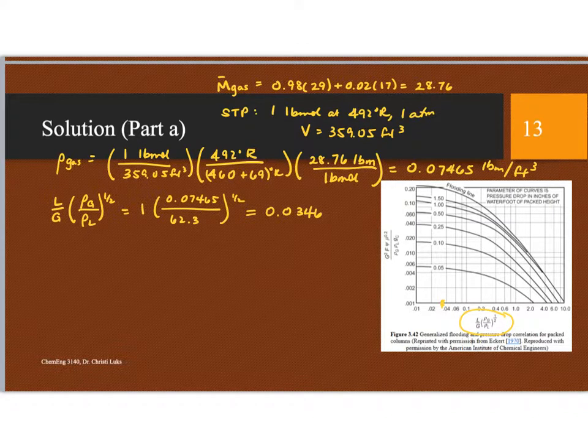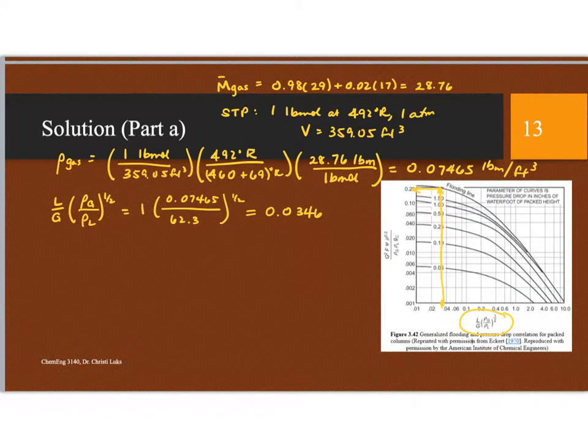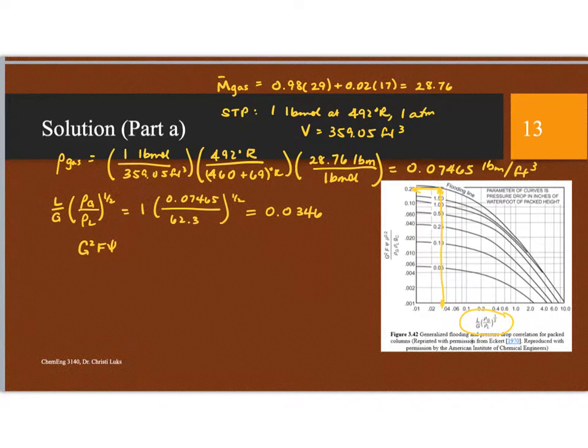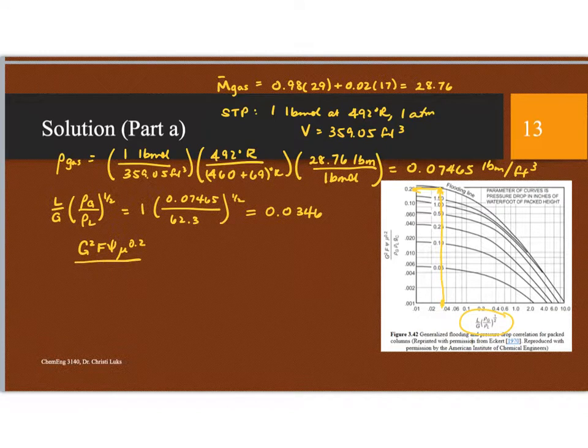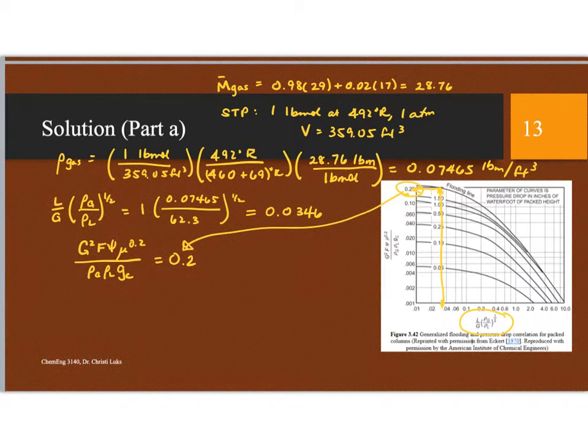Now, I'm looking for flooding, so there is a flood line on here. So if I go all the way to the top, to the flood line, and then read across, then what it tells me, this graph says that G squared F psi mu to the 0.2 over the density of the gas, the density of the liquid, G sub C, this is equal to 0.2. This number here, okay?